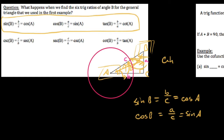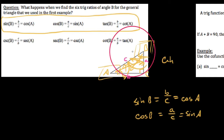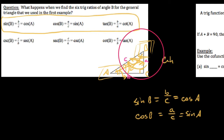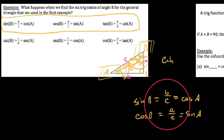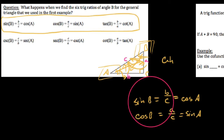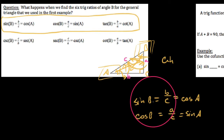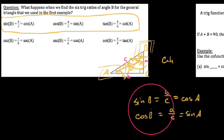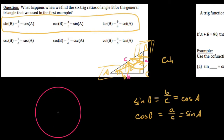This relationship exists not just between sine and cosine, but also between tangent and cotangent, and between secant and cosecant. Let's go ahead and elaborate on this a little bit.